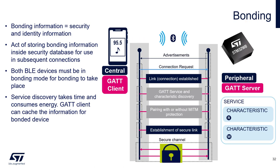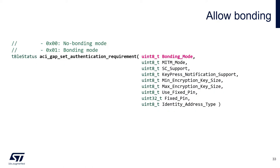Let's now have a look at bonding. Bonding simply means storing the identity and security-related information in non-volatile memory. For bonding to take place it must be supported on both devices. It can sometimes be used as a low-power feature: if two devices were connected in the past, the client already knows what services and characteristics exist on the server, so the next time they connect the client doesn't have to discover them all over again. This is however fully dependent on the implementation of the GATT client. To allow or disallow bonding we again use the ACI GAP Set Authentication Requirements API.